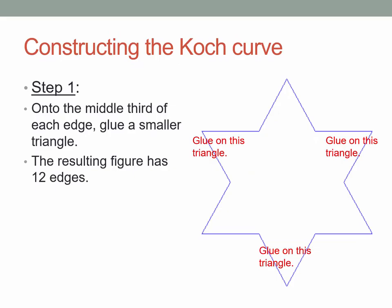Step one in the construction is to glue three smaller triangles, as indicated in this picture, onto the three sides of the triangle you began with. They are smaller in the sense that, although they are again equilateral triangles, the side length of each of these is just one-third the side length of the initial equilateral triangle. We get something that you may know as a Star of David, and it has 12 edges. We had three edges to begin with, and each of those edges has now been replaced with four shorter edges, giving us 12 edges.